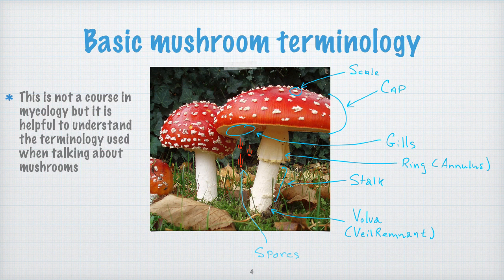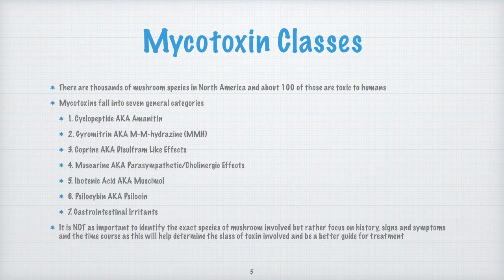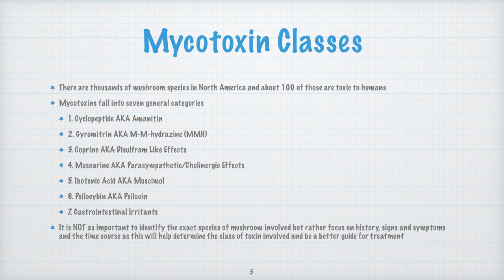Now let's get into the toxicological implications. There are literally thousands of mushroom species in North America alone, and about a hundred or so are particularly toxic to humans. Rather than talking about specific toxic mushrooms, I want to talk about categories or syndromes of mycotoxicity. The toxins these mushrooms produce — so-called mycotoxins — really fall into seven broad categories.